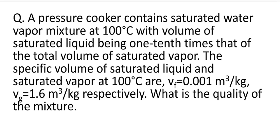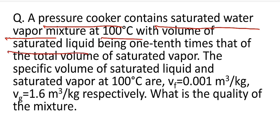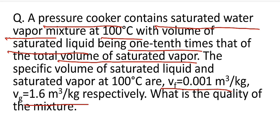Here is the question. In the given question, there is a pressure cooker which contains a saturated water and saturated vapor mixture at 100 degrees Celsius. The volume of saturated liquid is one tenth of the total volume of saturated vapor. The specific volume of saturated liquid is given as 0.001 meter cube per kg, and the specific volume of saturated vapor is 1.6 meter cube per kg. We have to find the quality or dryness fraction of the given mixture.